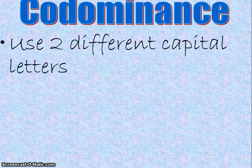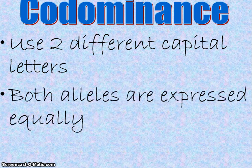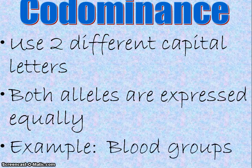Codominance is when you have two alleles expressed equally. We're going to use two different capital letters. We see this with blood types and blood groups.